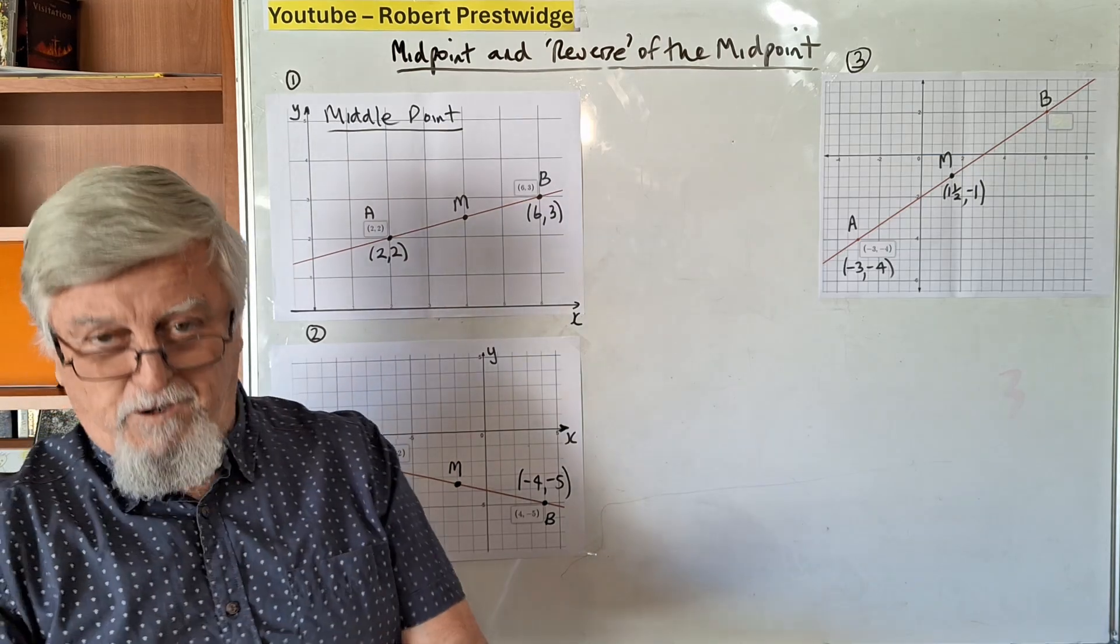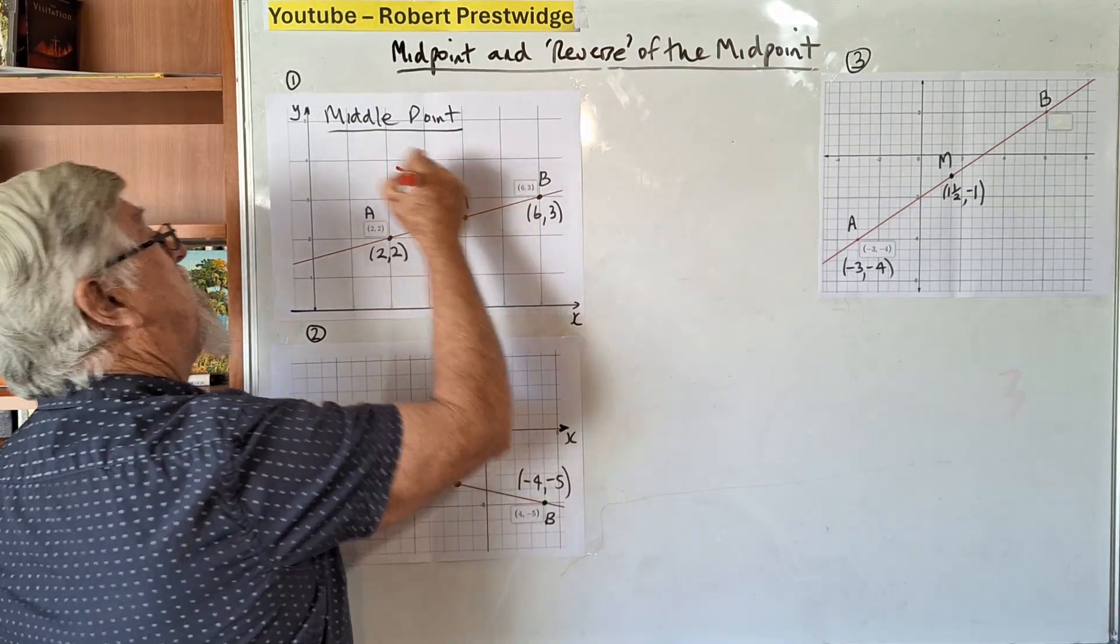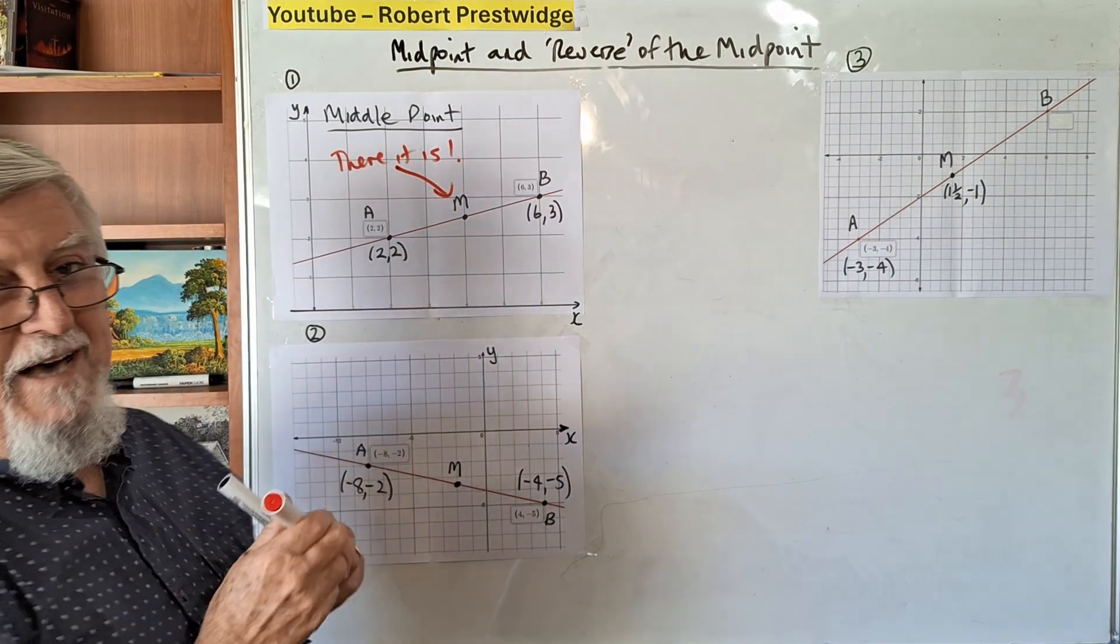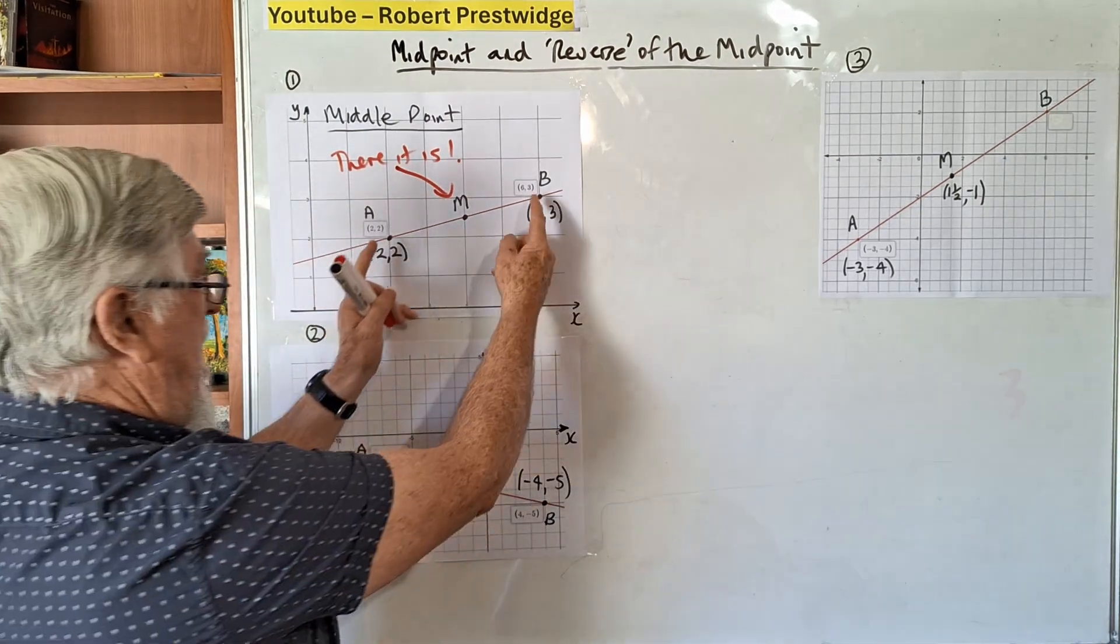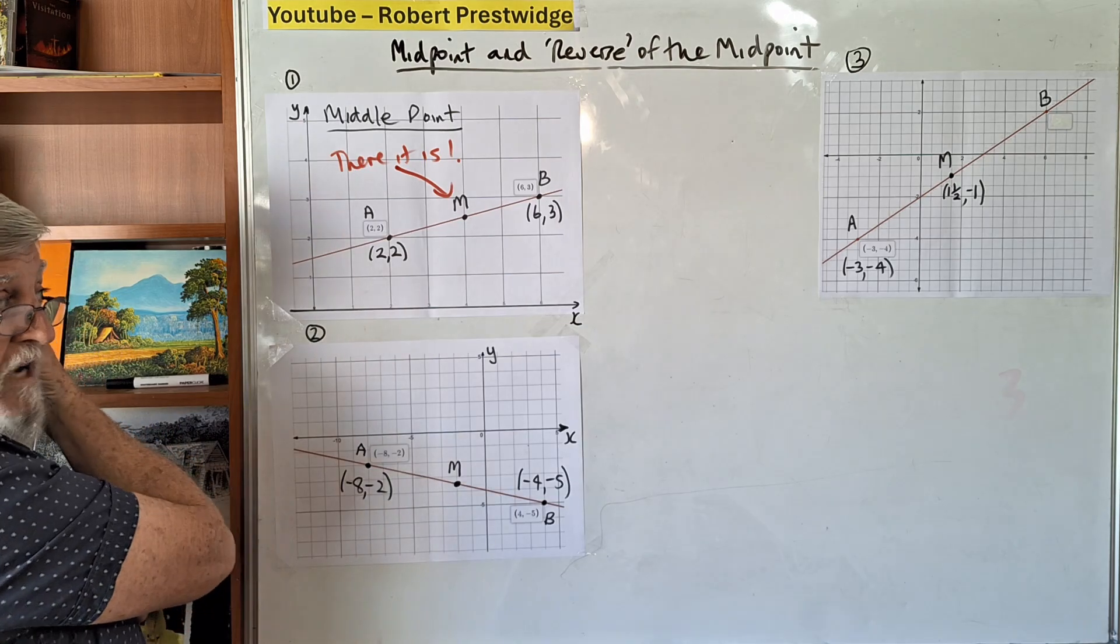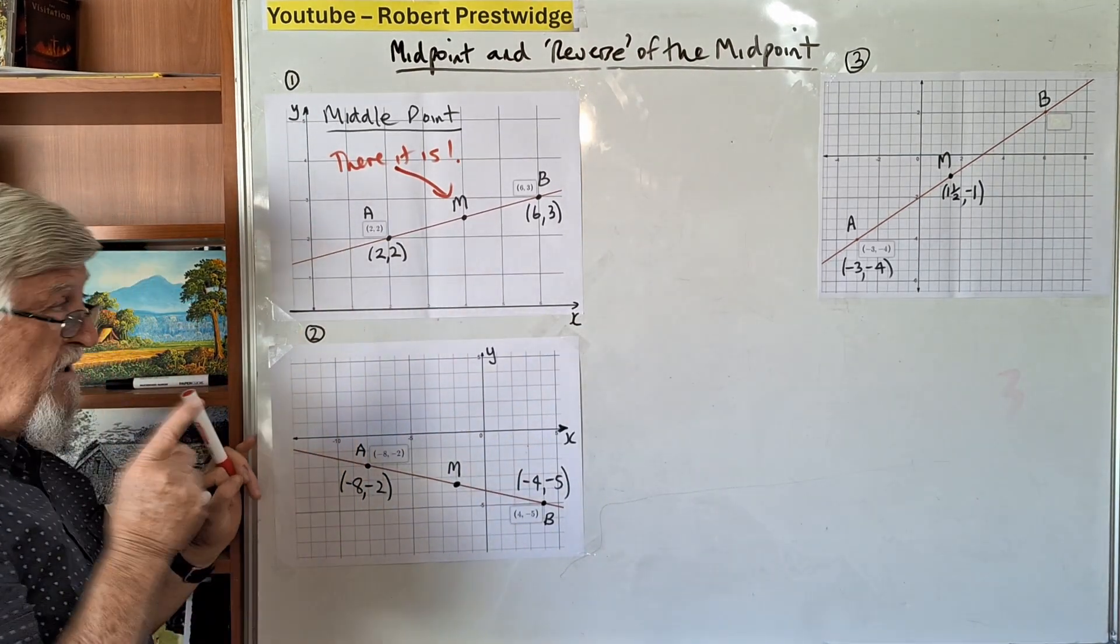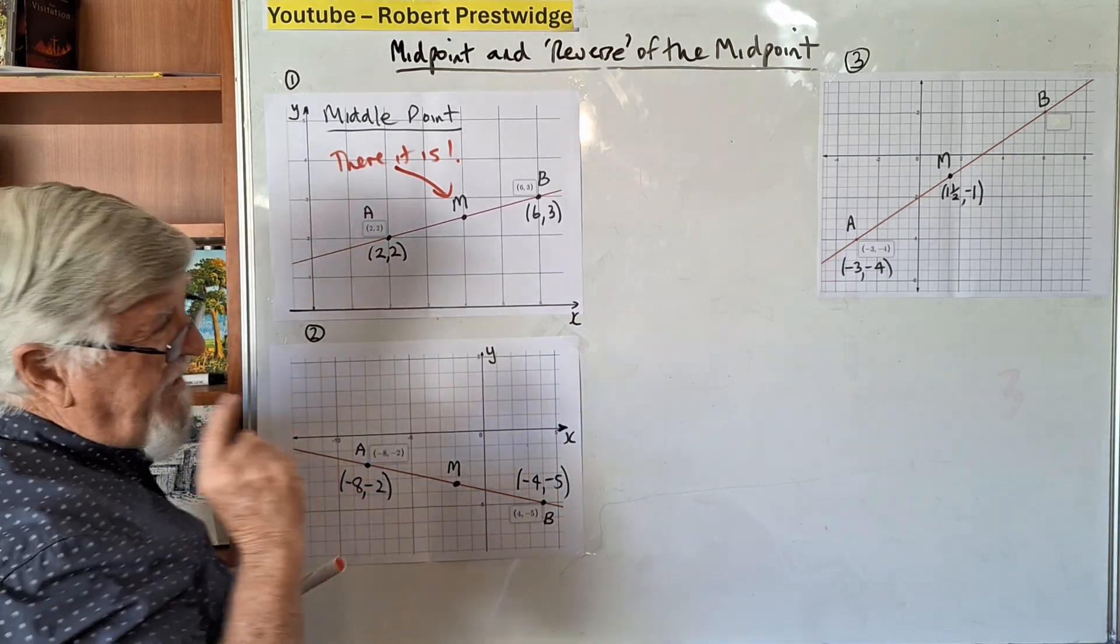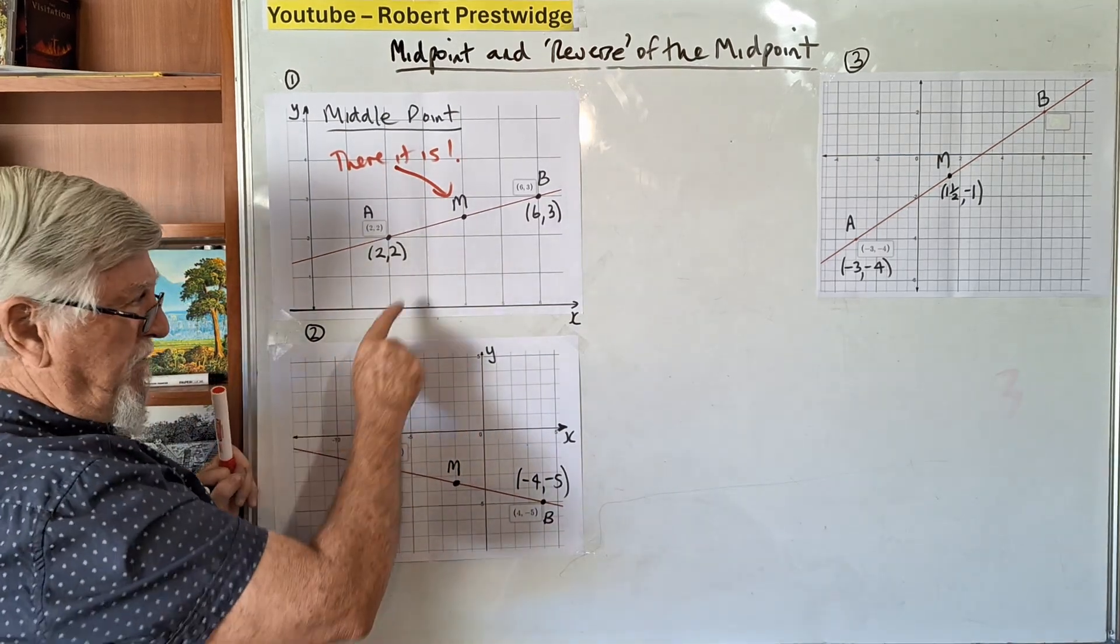I like to joke and look at the diagram and say there it is - halfway between them is obviously there. We use capital M for midpoint. If this visual approach works for your brain, you don't need the formula, but most people need the formula to do the question.